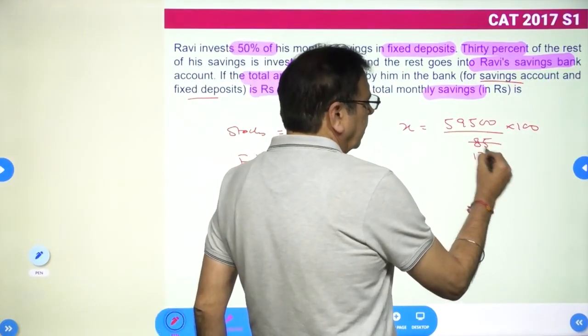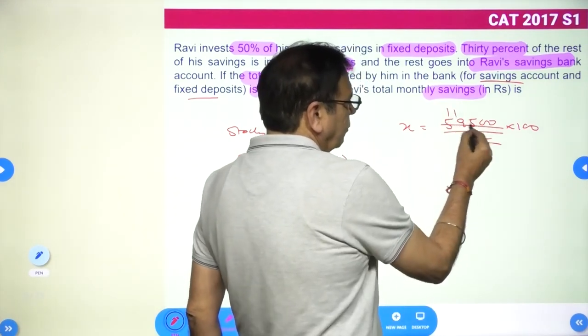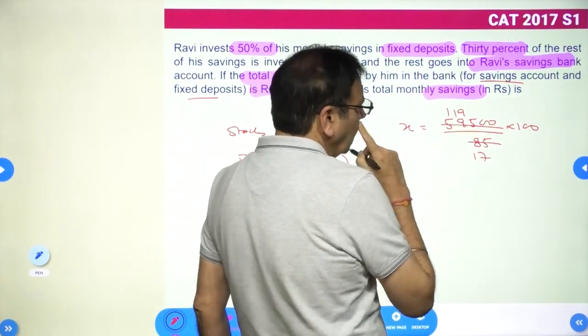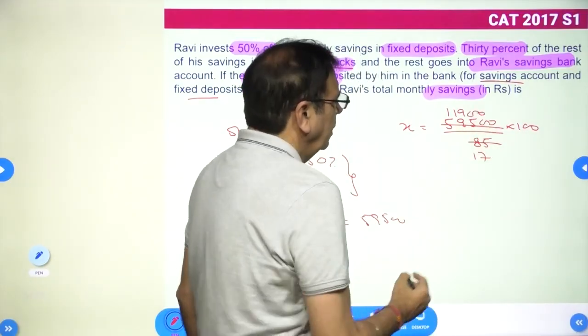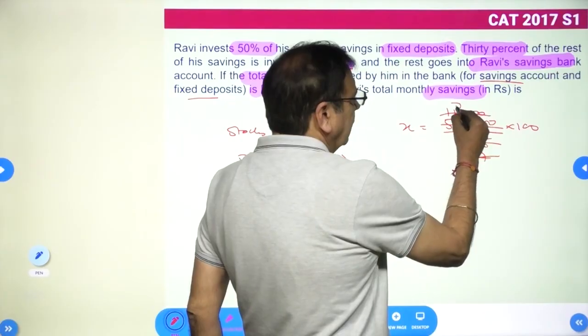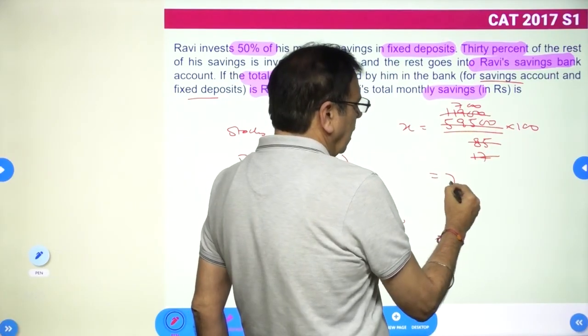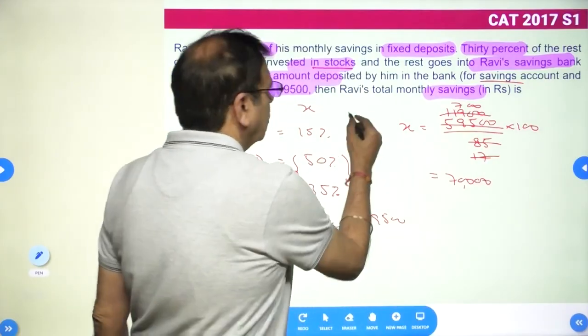Let's do 5 × 17. 5 ones are 5, 5 nines are 45, so that's 85. And 17 × 7 is 119. So this is 700, which means 700 × 100 equals 70,000. The answer should be 70,000.